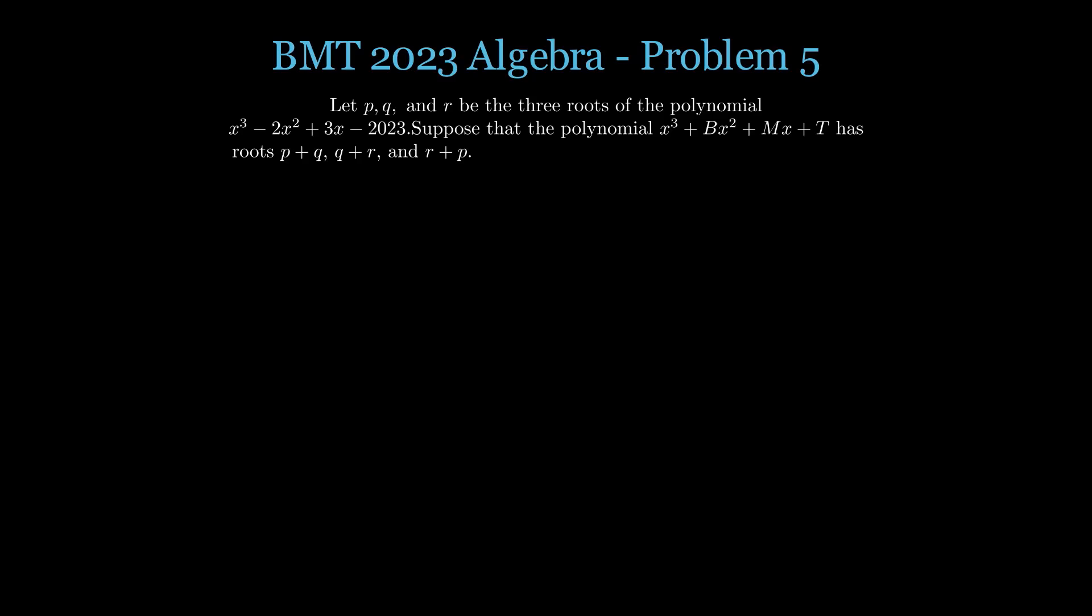The roots of this new polynomial are p plus q, q plus r, and r plus p. Our task is to compute the coefficients b, m, and t and find the value of b minus m plus t.